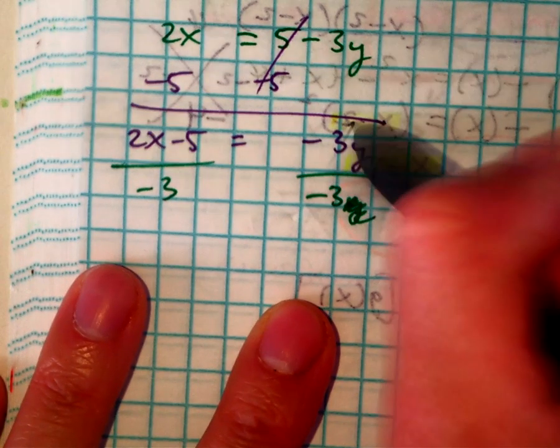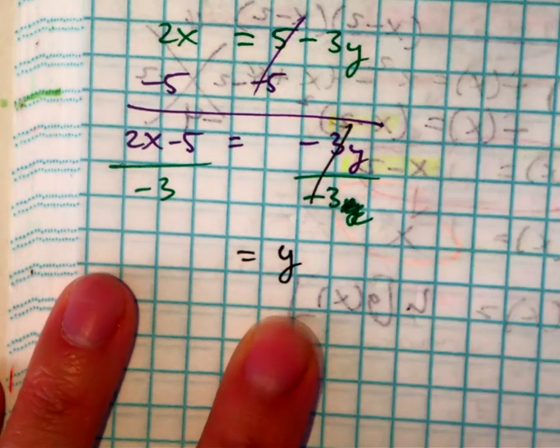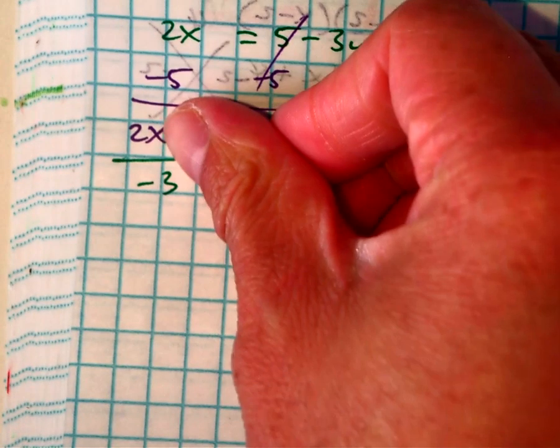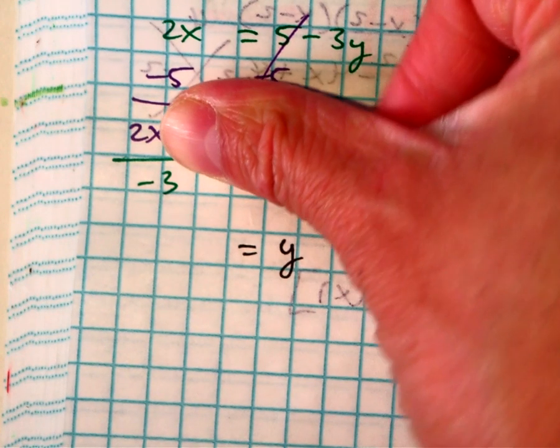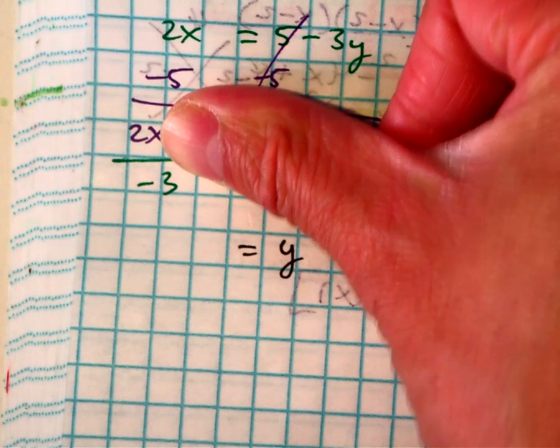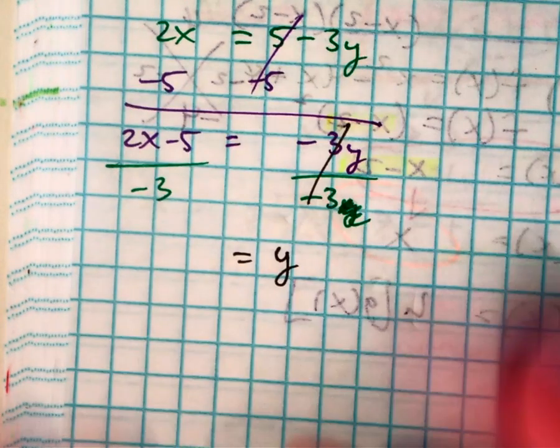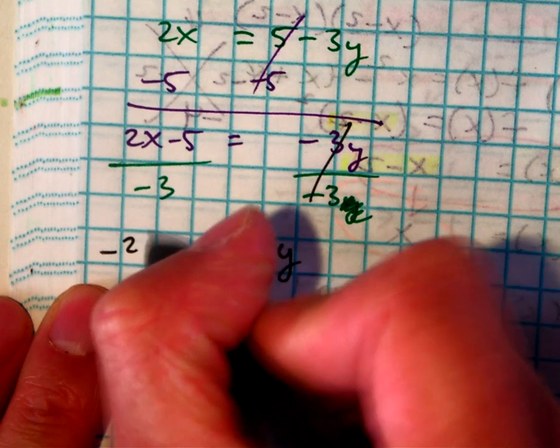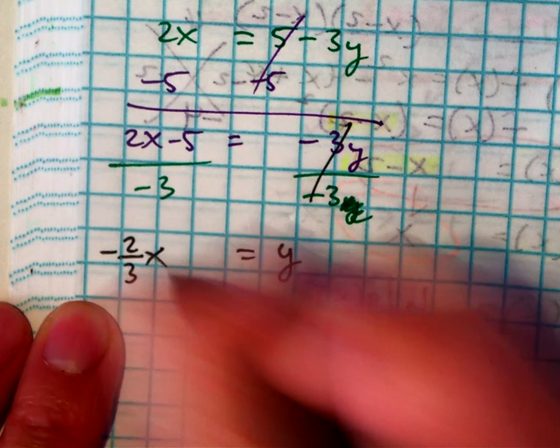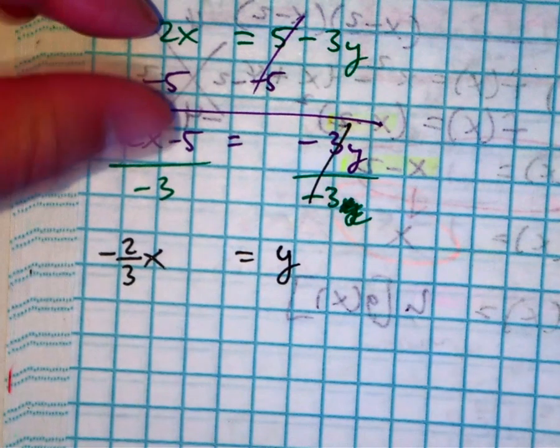So, negative 3 divided by negative 3 is just y. Here, I have 2x divided by negative 3, which is what class? Negative 2 thirds x.